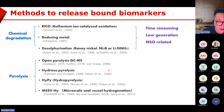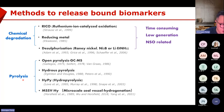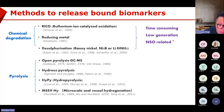How can we release bond biomarkers from the macrostructure? Basically two ways: chemical degradation, or the more aggressive pyrolysis. Chemical degradation methods are generally time-consuming and have low efficiency. Most people work on NSO-related biomarkers like desulfurization to check chemically degraded biomarkers.